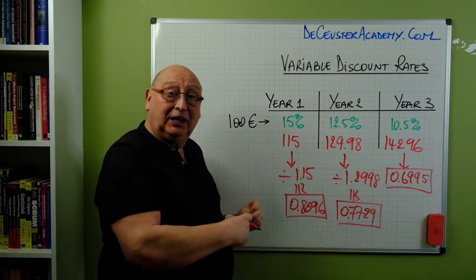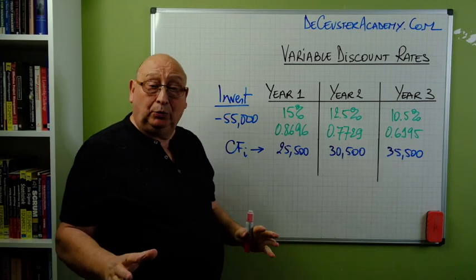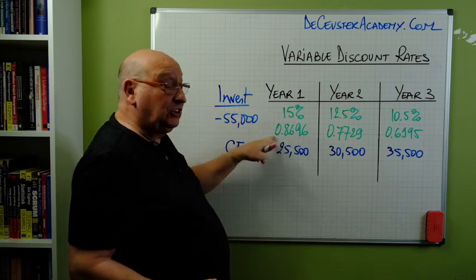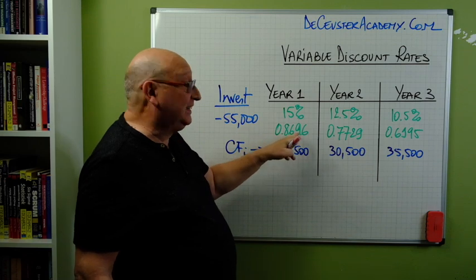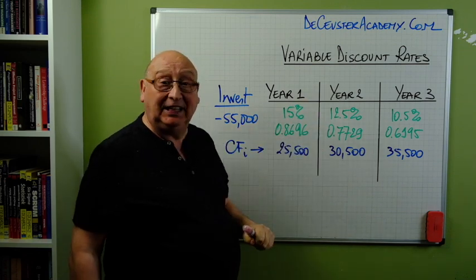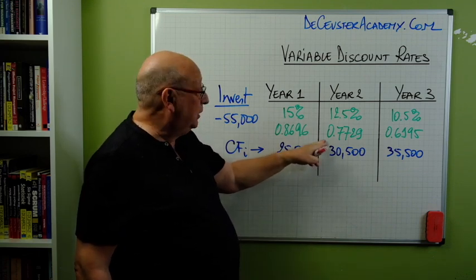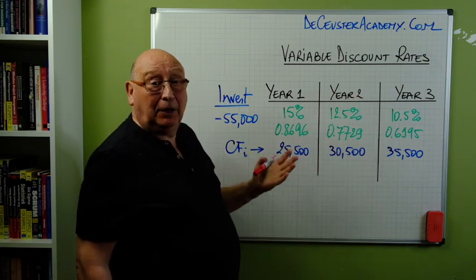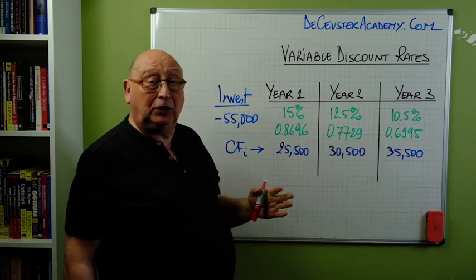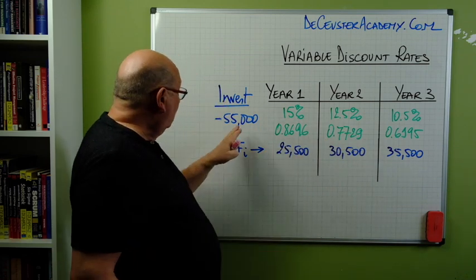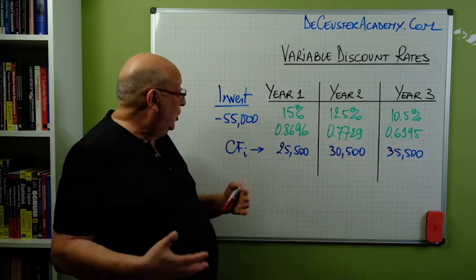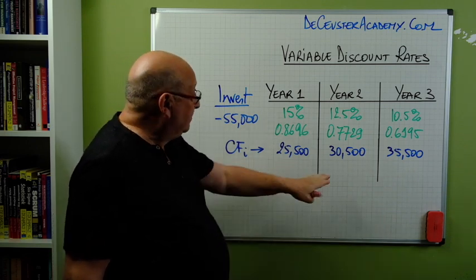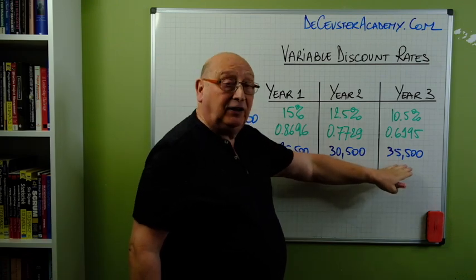Let's do that in the next part of this video. This is the table with different cash flows over time. For year one, 15% gives a discount factor of 0.8696. For year two, 12.5% gives a discount factor of 0.7729. And in year three, a rate of 10.5% gives a discount factor of 0.6995. We have an initial investment of 55,000 with a minus sign, and cash flows for year one of 25,500, year two 30,500, and year three 35,500.